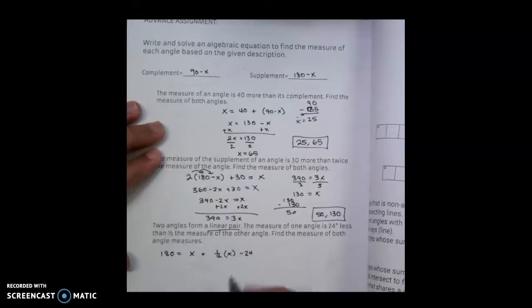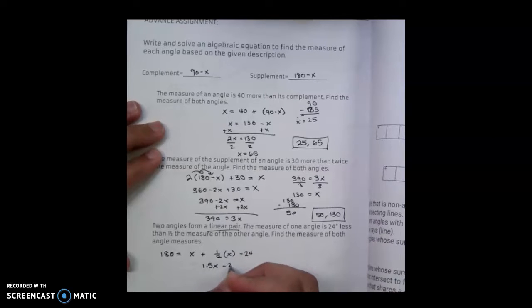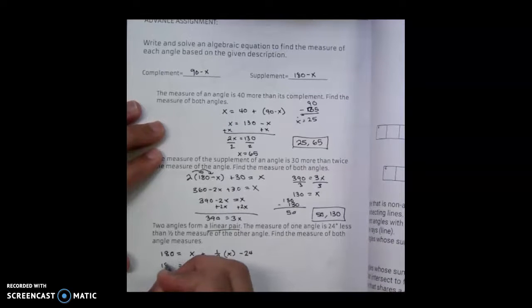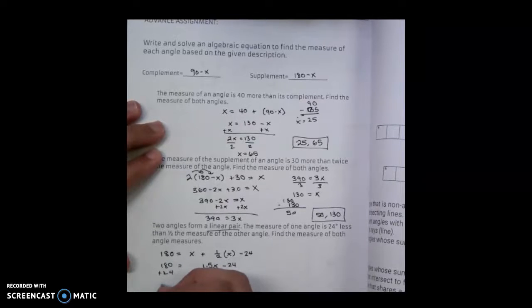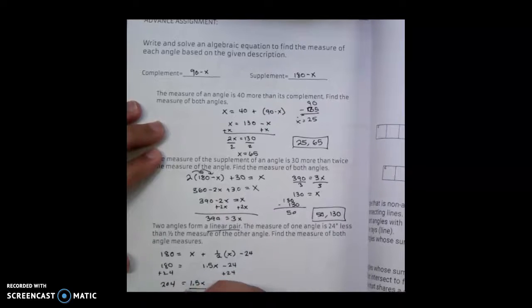Now I find the measure of both. I can combine like terms until I get 1.5x minus 24 equals 180. When I add 24 to both sides, to get numbers on one side and x on the other, I get 204 is equal to 1.5x. I can divide both sides by 1.5, which results in x equaling 136.